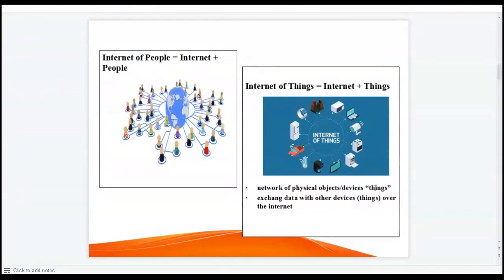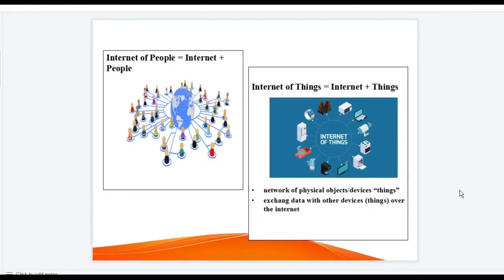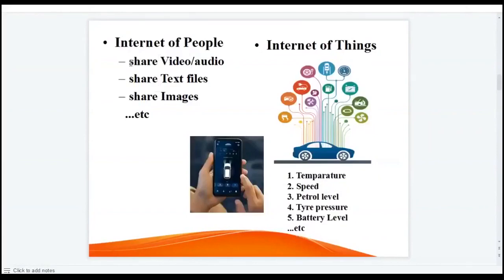So what is the Internet of Things? Well, it is a network of physical objects or devices — we call them 'things' — and these devices exchange data with each other over the internet. In simple language, we can say that IoT is a network of physical objects or devices offering intelligent computing services. The things or devices in IoT are called smart devices or smart things.